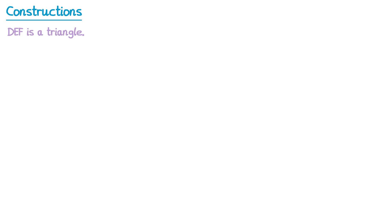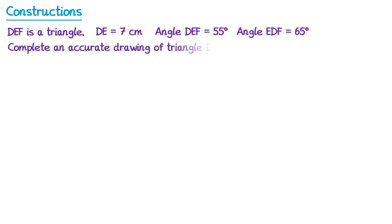We're going to construct one more triangle — triangle DEF — where DE is 7, angle DEF is 55 degrees, and angle EDF is 65 degrees. So this time we have just one side but two angles. The question also asks us to complete an accurate diagram, rather than the word 'construct', which means we're allowed to use the protractor. So we'll start by drawing the only length we have, which is side DE at 7 centimetres.